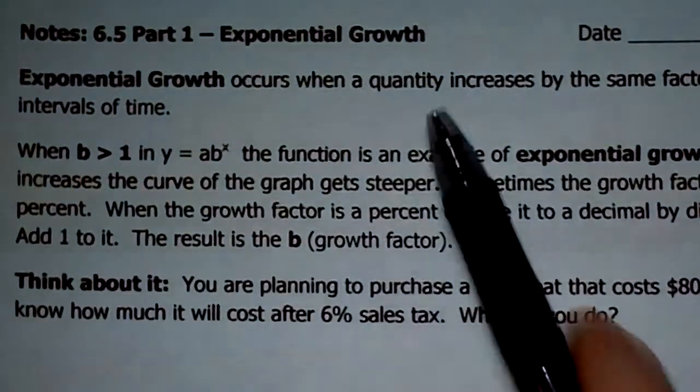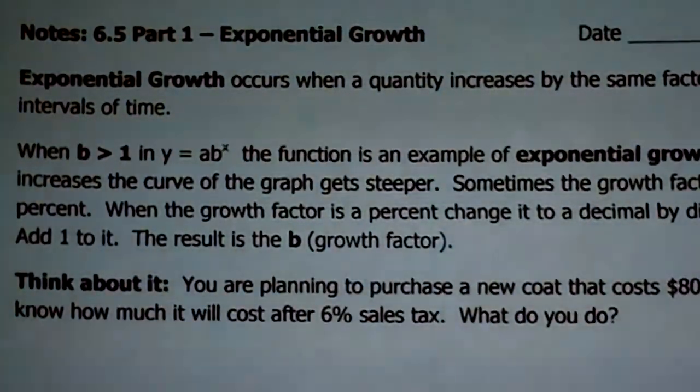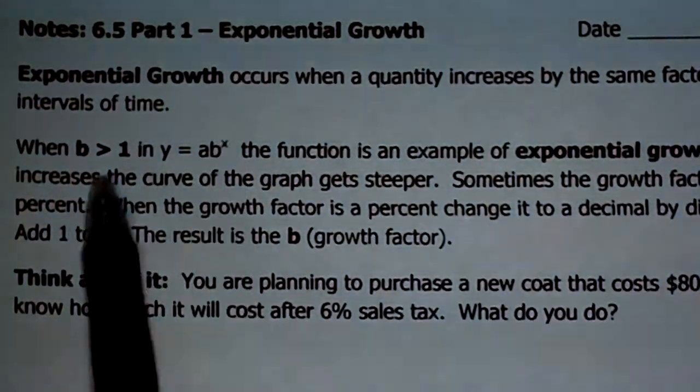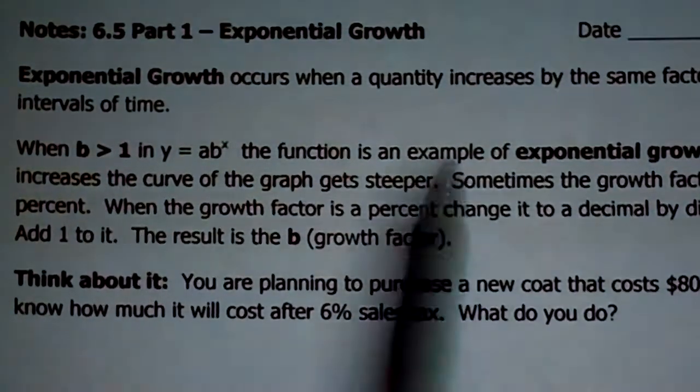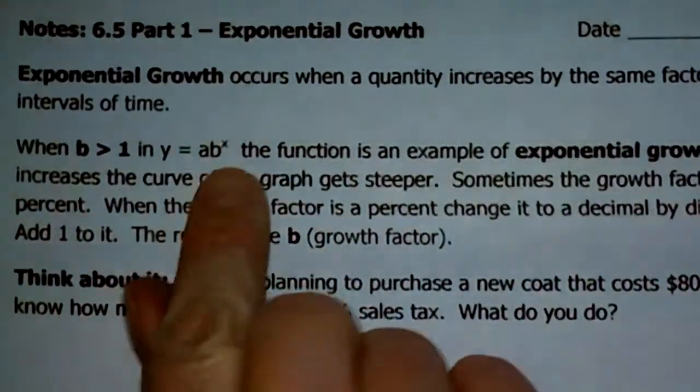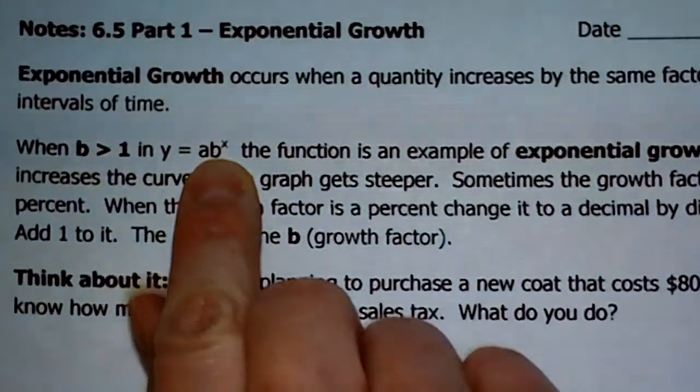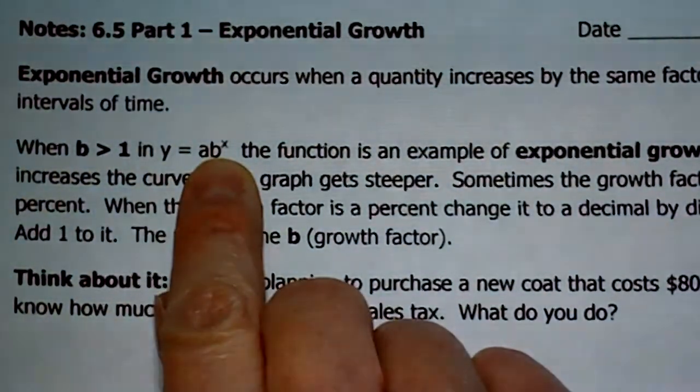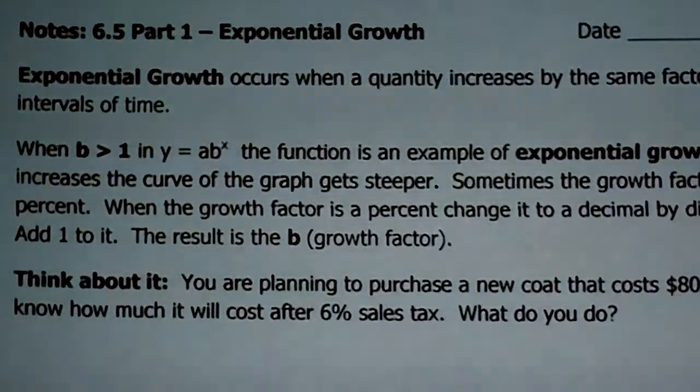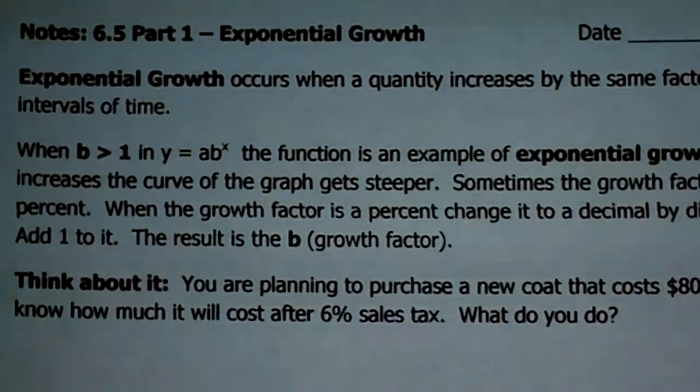That happens when a quantity increases by the same factor over equal intervals of time. Again, when b in y equals ab^x is greater than 1, then it's an example of exponential growth. So when you get an amount b, when your growth factor is greater than 1, that's an example of exponential growth. As b increases, the curve of the graph gets steeper and steeper. I'm sure you remember that from your calculator lab.